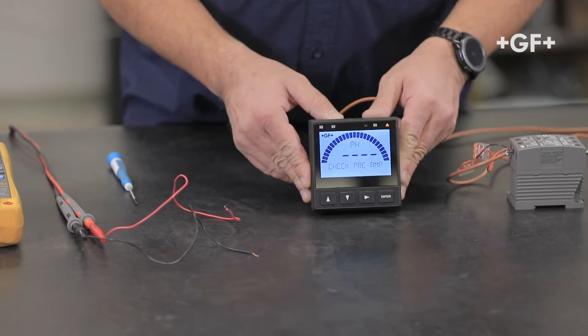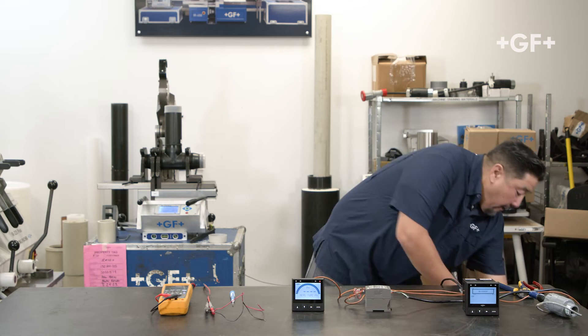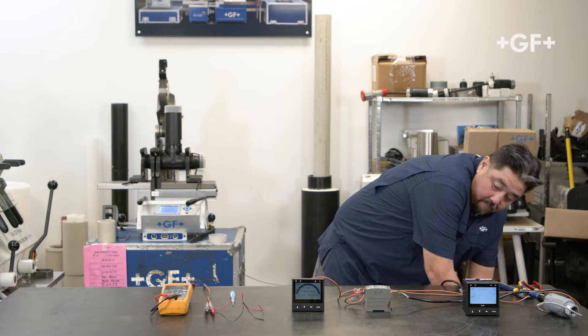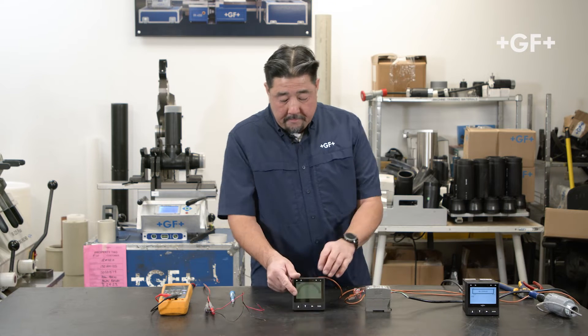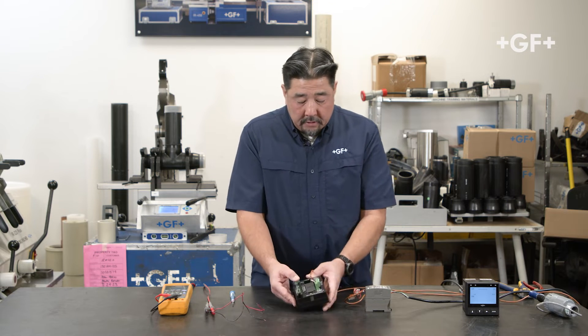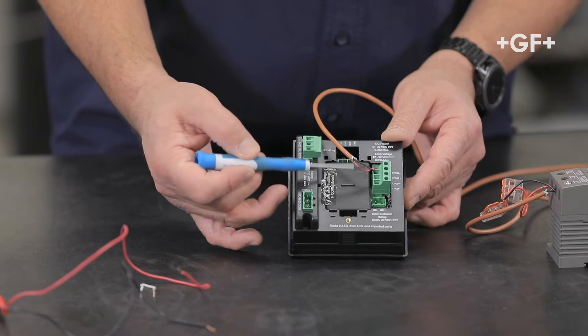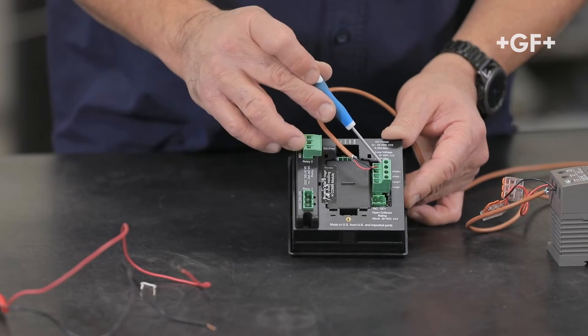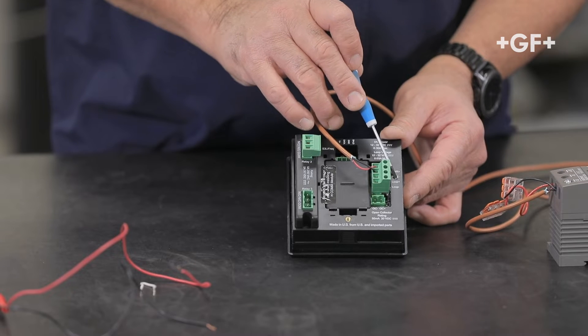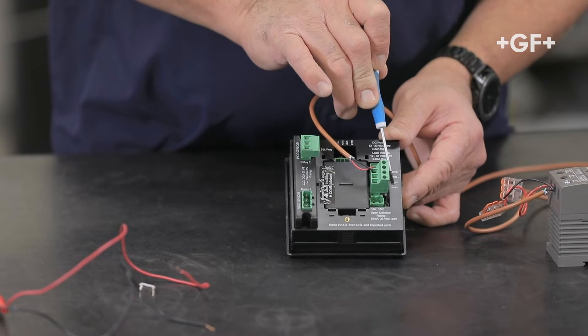First thing we'll do is take power off and turn it over. You'll see our power block that's got four terminals: one for power plus, one for power minus, one for loop plus, and one for loop minus.